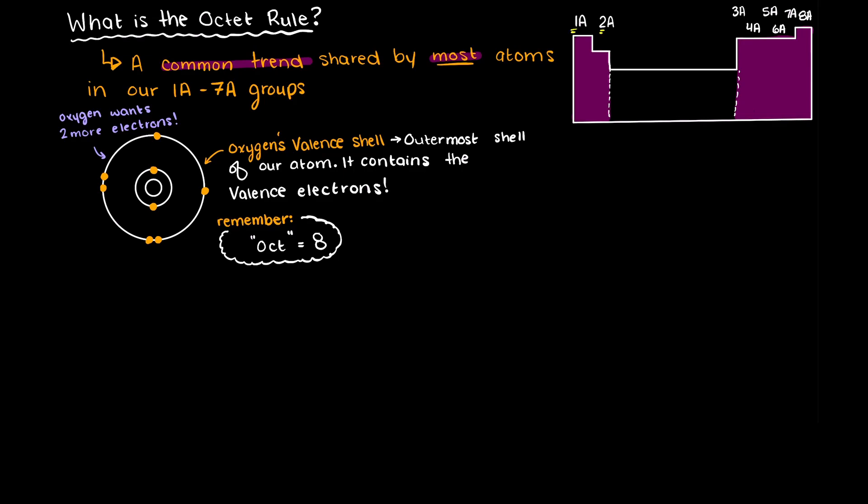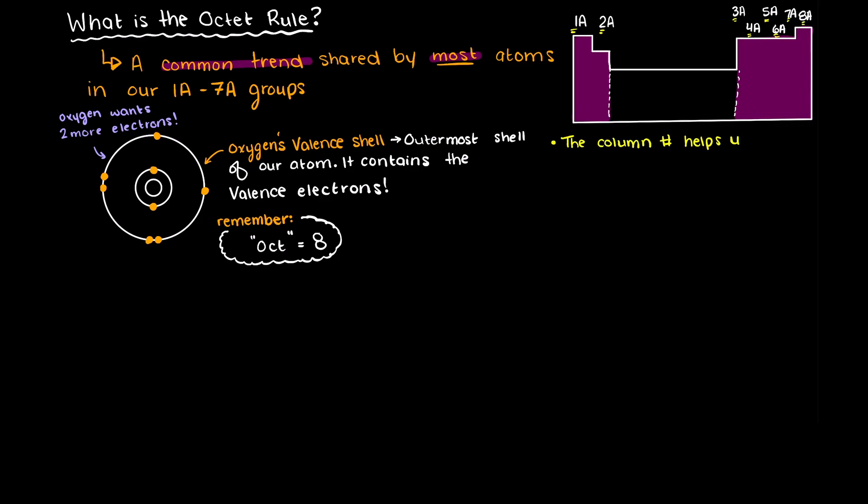You can also use the group number in the periodic table to help you quickly remember how many valence electrons each group's element has. This group number at the top actually gives the number of valence electrons each element has. For example, oxygen is in group 6a and therefore has 6 valence electrons.